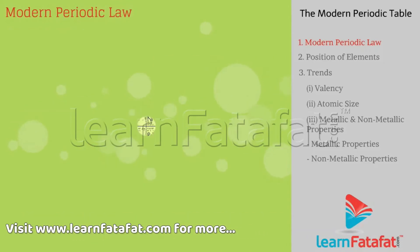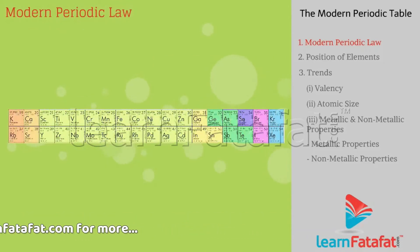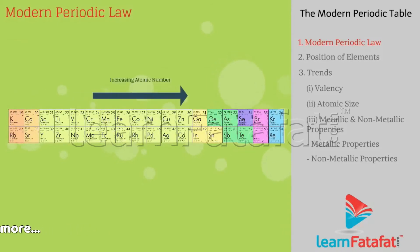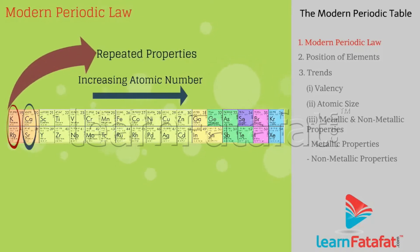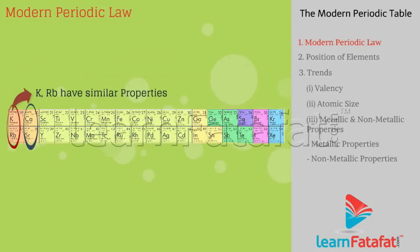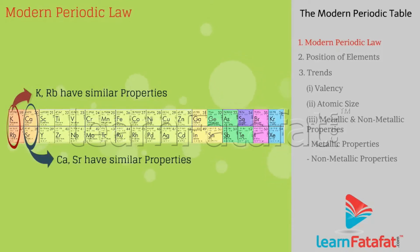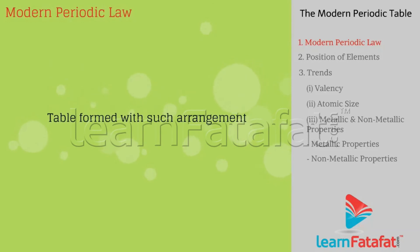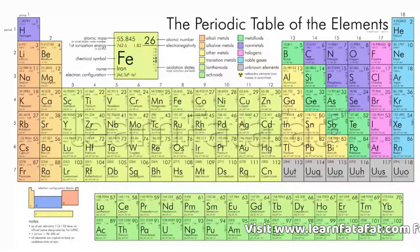That is, when elements are arranged horizontally in order of increasing atomic number, then a certain set of properties get repeated after some elements. For example, potassium and rubidium have similar properties, and calcium and strontium have similar properties. The table formed with such arrangement is called the Modern Periodic Table.